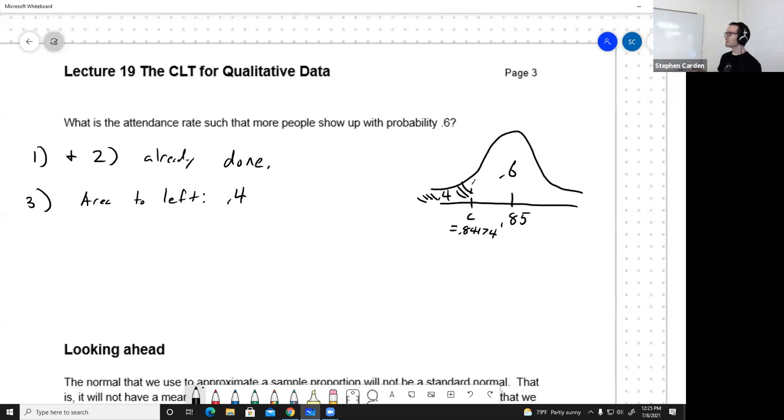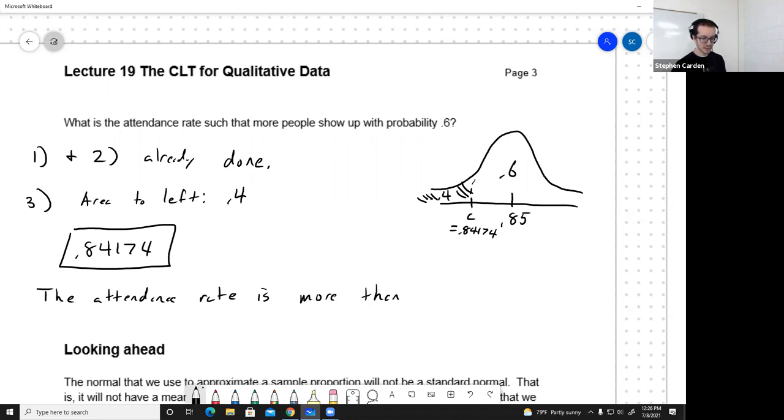Just do a common sense check. Does that seem reasonable? I think so. For this one, I'll end with a sense of interpretation. Okay. The attendance rate is more than. For the interpretation sentence, I'll put it as a percentage. Seems a little more natural and not carry quite so many significant figures. Is more than 84.2% on 60% of class days. Attendance rate is more than 84.2% on 60% of class days.